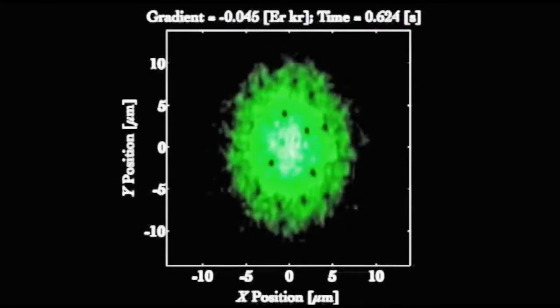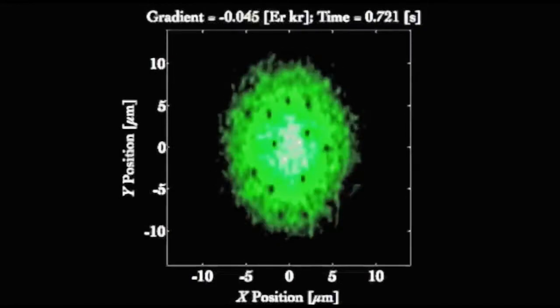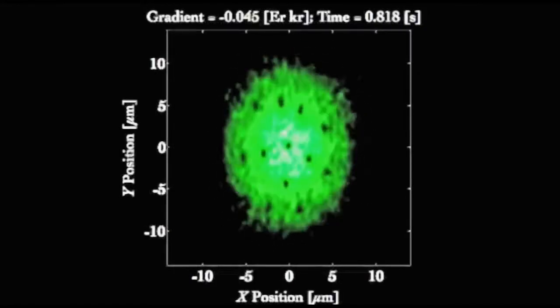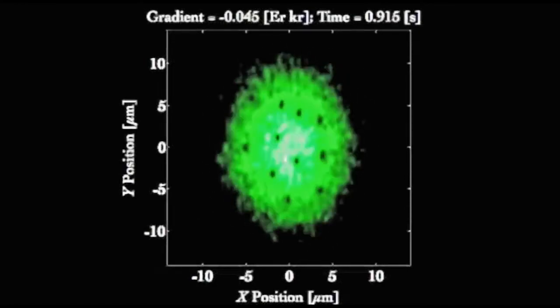Once the vortices enter the system, they begin to swirl and dance in a complicated pattern, with their motion gradually slowing towards the end of the simulation. After very long times, they begin to form a slightly ordered pattern that becomes increasingly ordered as time goes on.